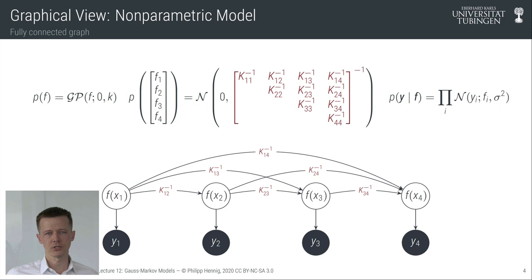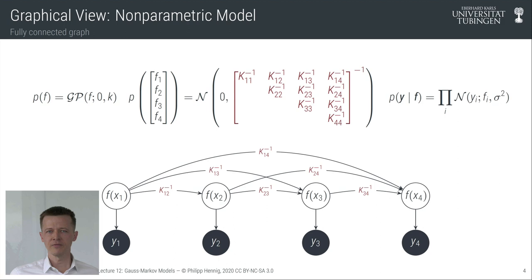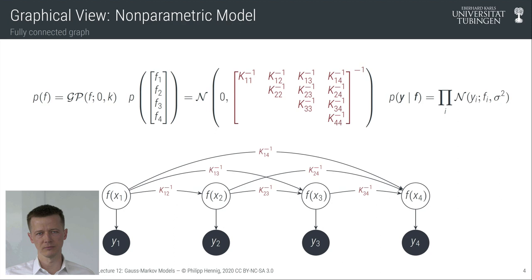In these settings, conditional independence structures didn't really help us that much because this is in some sense the most trivial graph — the one where everything is connected. Every joint probability distribution can be represented by a fully connected graph, but that's also pretty useless precisely because it doesn't encode any additional information about the joint distribution.